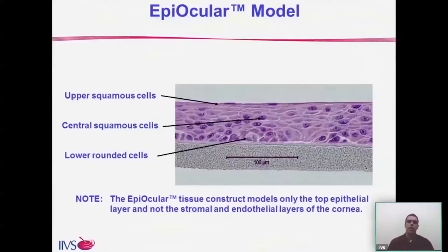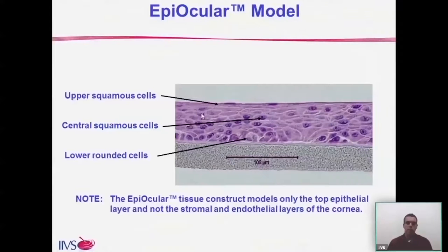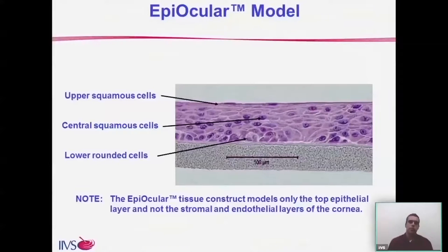The next assay system is the EpiOcular model. While other human corneal epithelial models exist, our main experience is with EpiOcular since it is a US-based product and we have extensive historical data with it. These tissues are derived from human keratinocytes and developed into approximately five to eight cell layers thick, closely mimicking the epithelium of the cornea. The organized tissue layer has both squamous cells and lower rounded basal cells, all sitting on top of a porous cellulose membrane that allows the media to continually feed the cells throughout the assay. Because it models only the epithelium, EpiOcular is a much more sensitive model than the full-thickness BCOP assay.